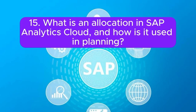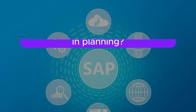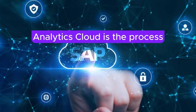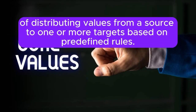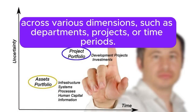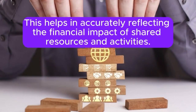Question 15: What is an allocation in SAP Analytics Cloud, and how is it used in planning? Answer: An allocation in SAP Analytics Cloud is the process of distributing values from a source to one or more targets based on predefined rules. Allocations are used in planning to distribute costs, revenues, or other financial metrics across various dimensions such as departments, projects, or time periods. This helps in accurately reflecting the financial impact of shared resources and activities.